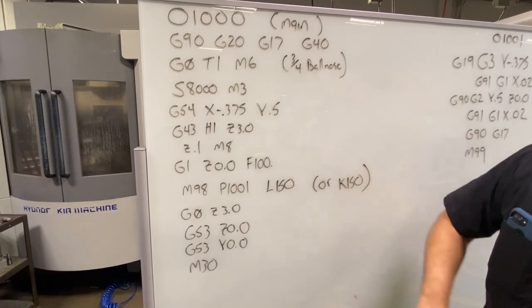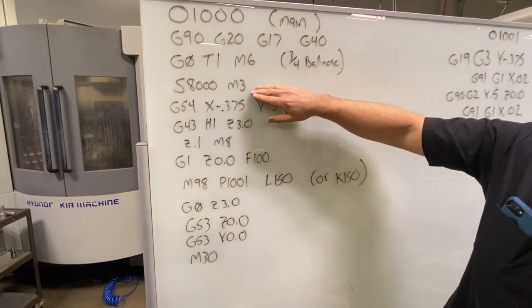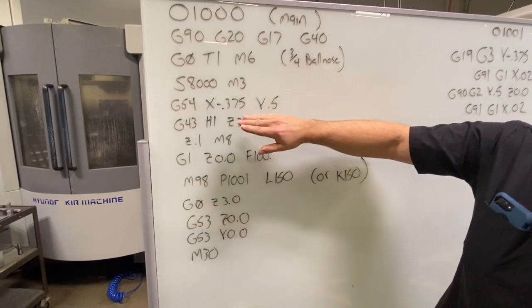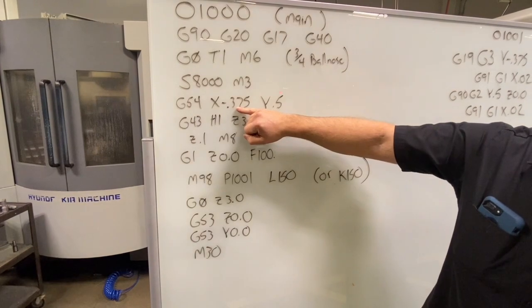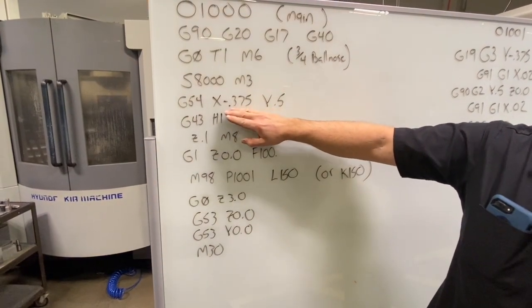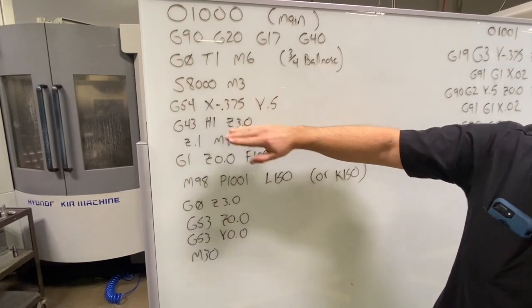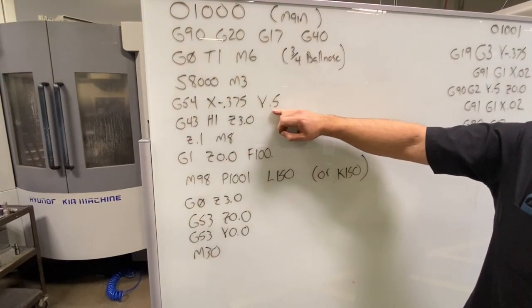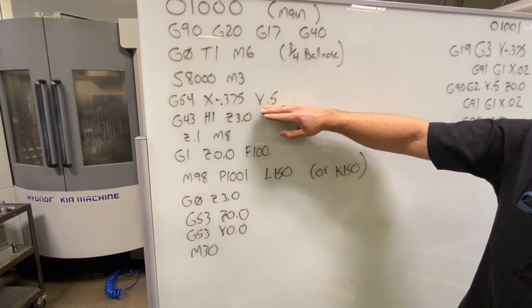My next line, I'm going to get the spindle running, speed of 8000 clockwise direction. And then I'm ready to position to my first point. I call up my workpiece coordinate system and I move to that X negative 0.375, places the center of the tool just off the edge of the part, and then Y.5, that's going to make the center line of my ball right to the tangent point of the top of that radius.